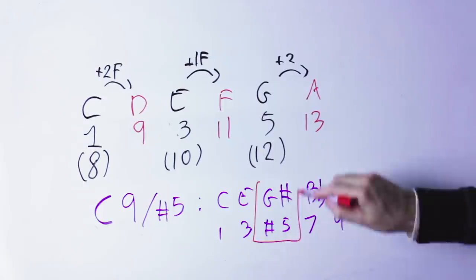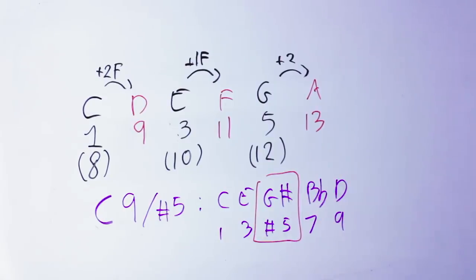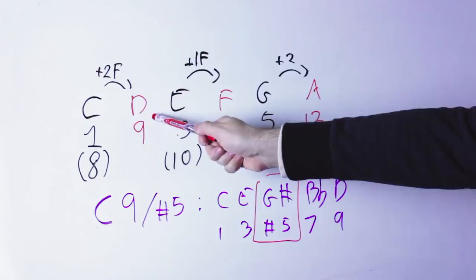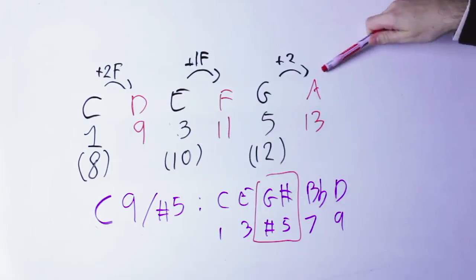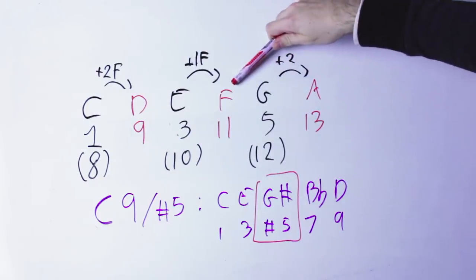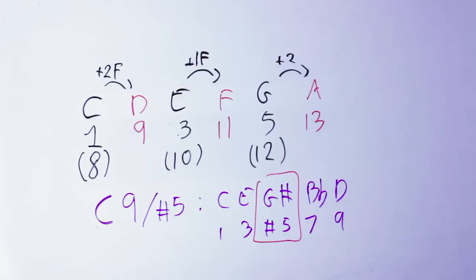Just remember, the ninth is always two frets above the root, the thirteen is always two frets above the fifth, and the eleventh is always one fret above the major third, or two frets above the minor third, so you always know what are those notes for any major or minor chord.